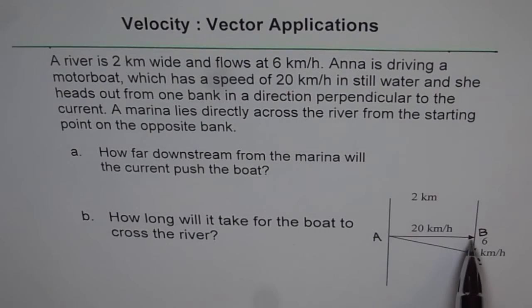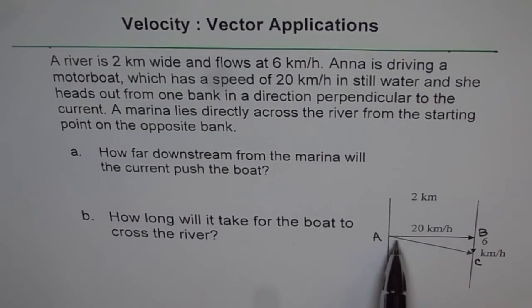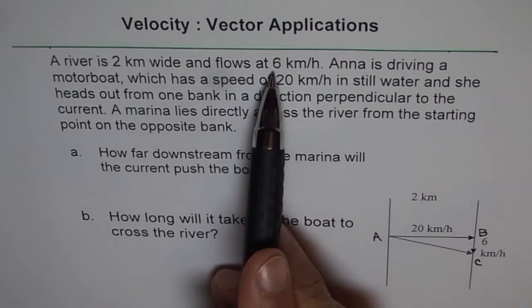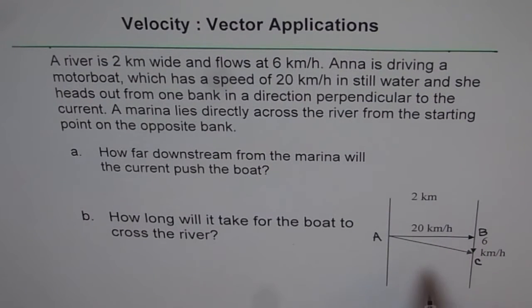So in the velocity diagram, what we are drawing here is 20 km per hour is the speed in still water for the motorboat. Now, the water is flowing at a rate of 6 km per hour and it is going downstream, that is going downstream.